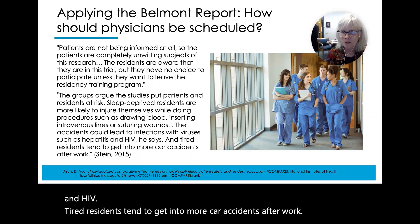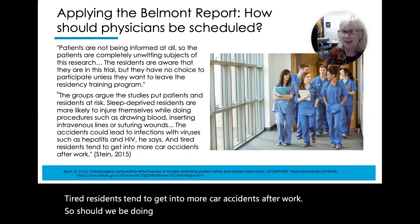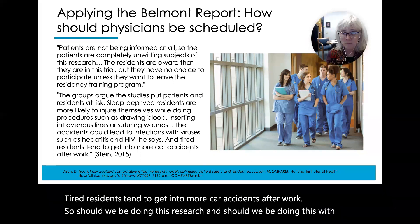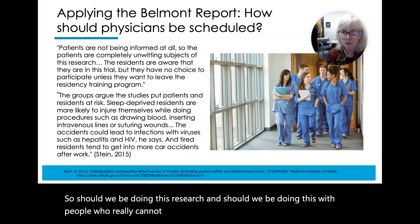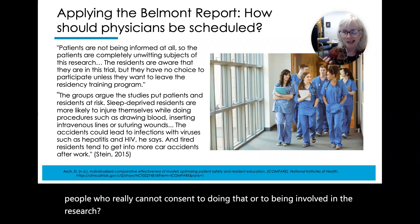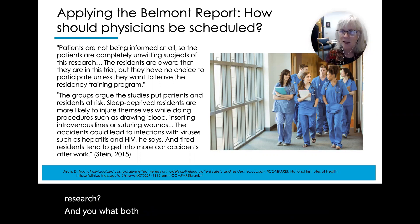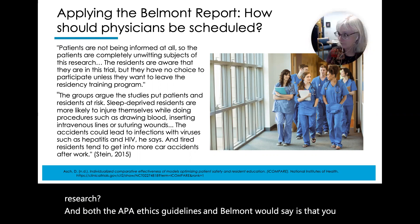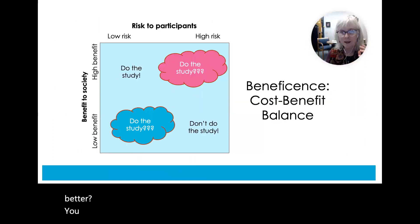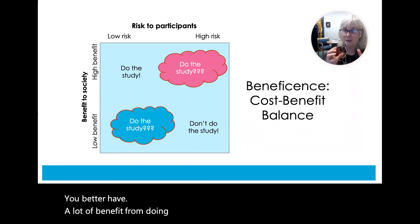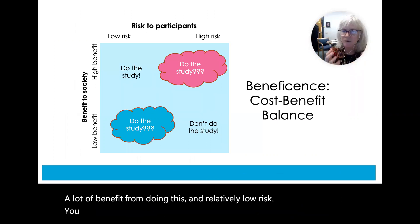Should we be doing this research with people who really cannot consent to being involved? What both the APA ethics guidelines and the Belmont Report would say is that you need to have a lot of benefit from doing this and relatively low risk — and what kinds of safeguards are you putting into place?